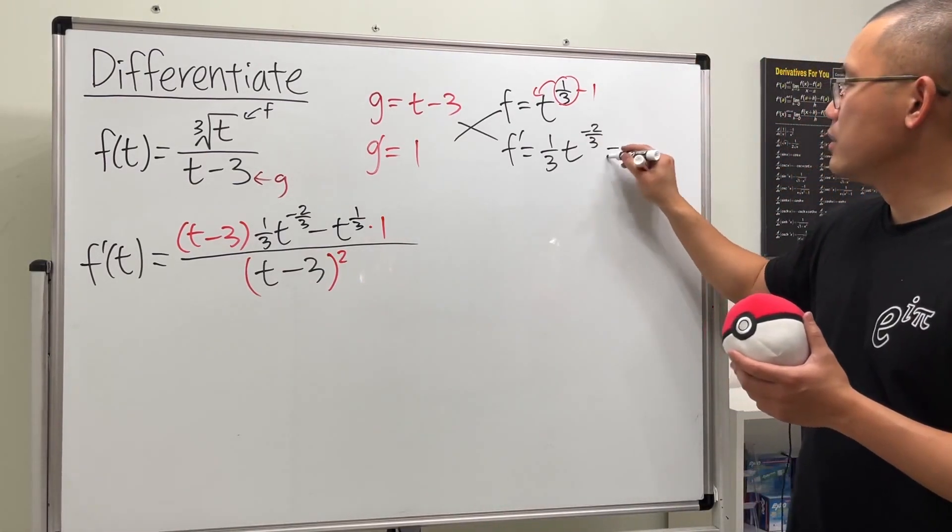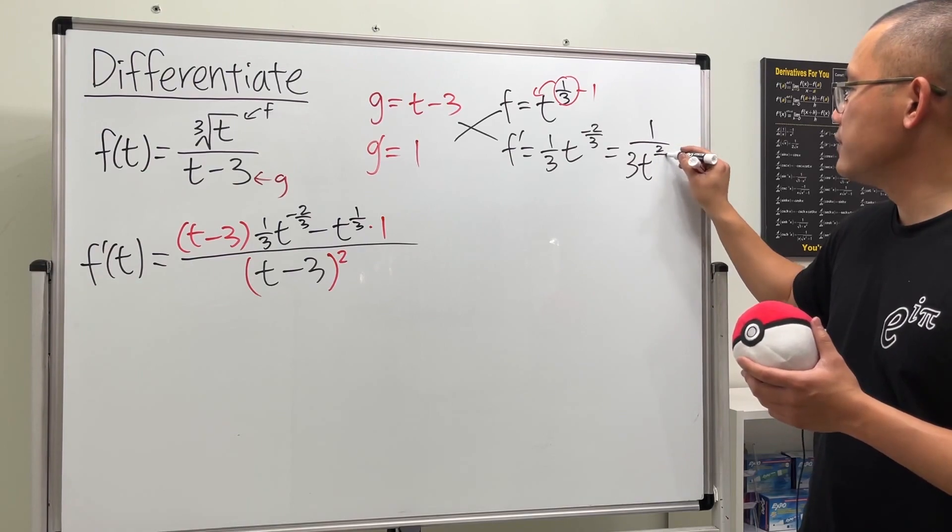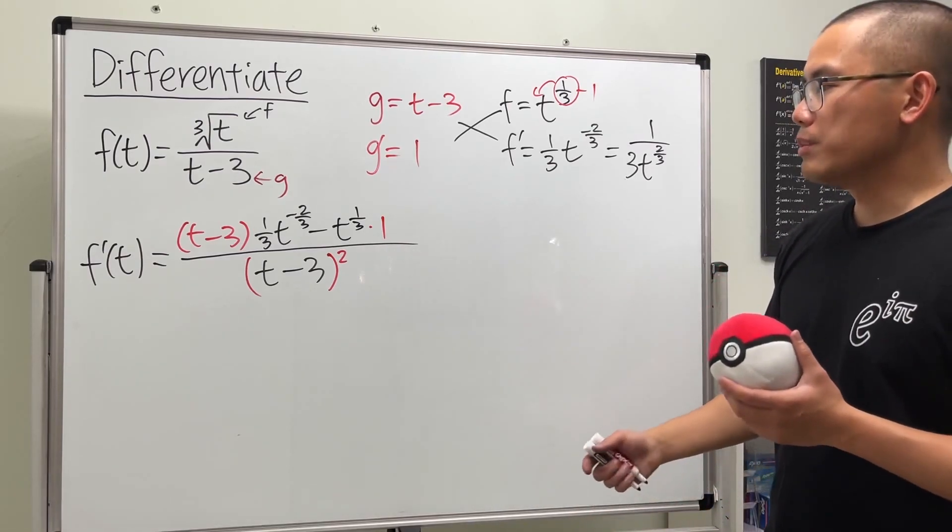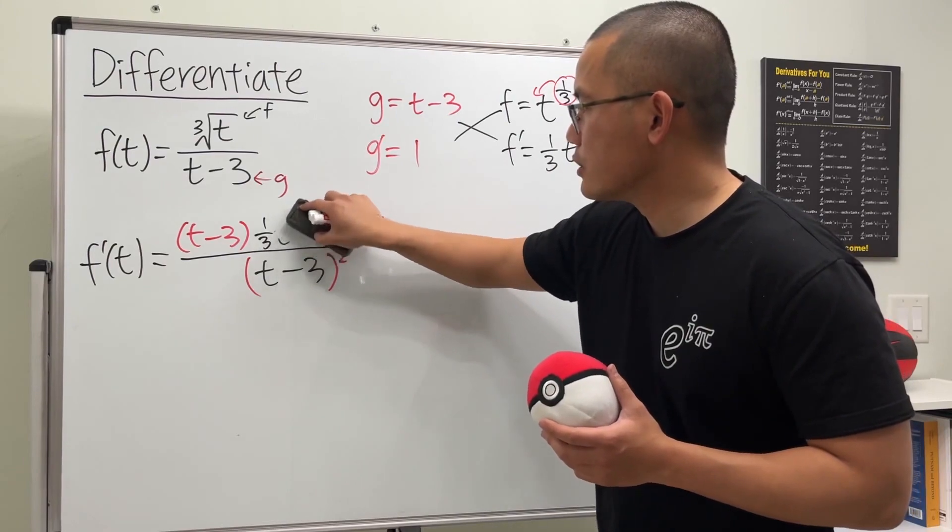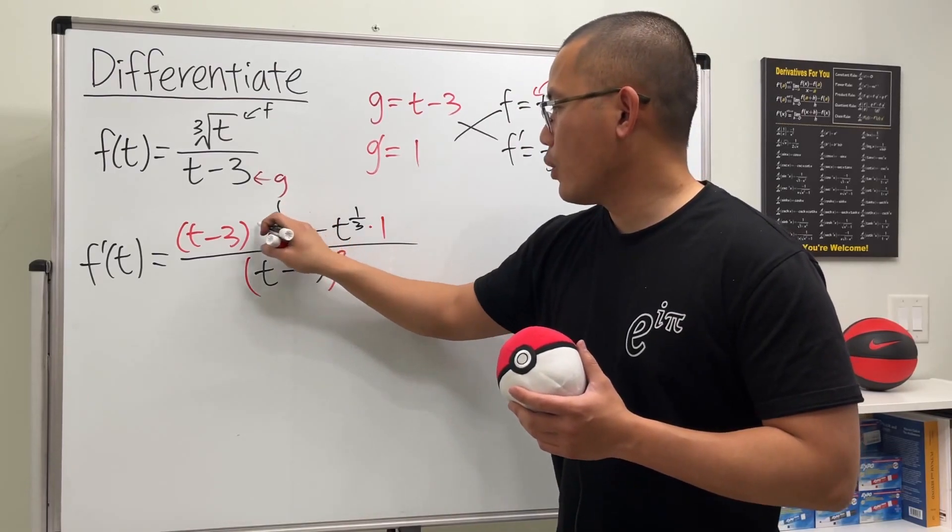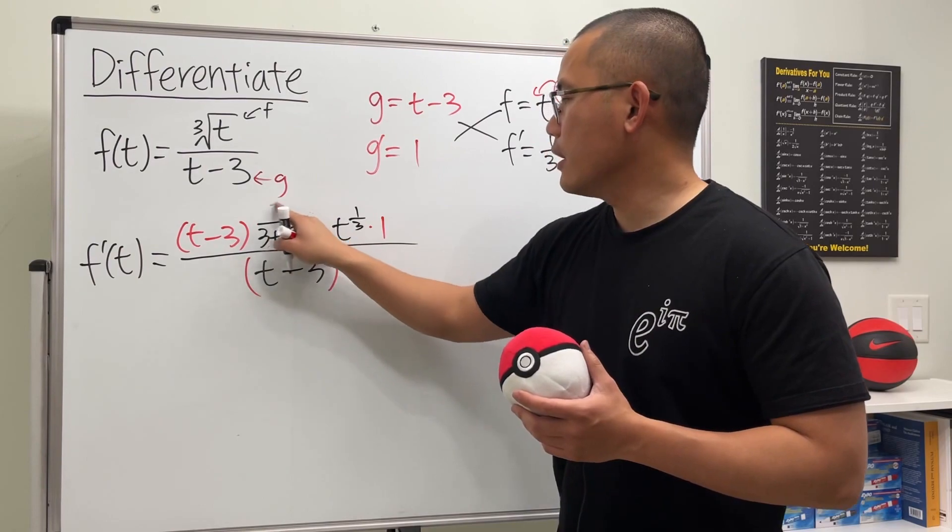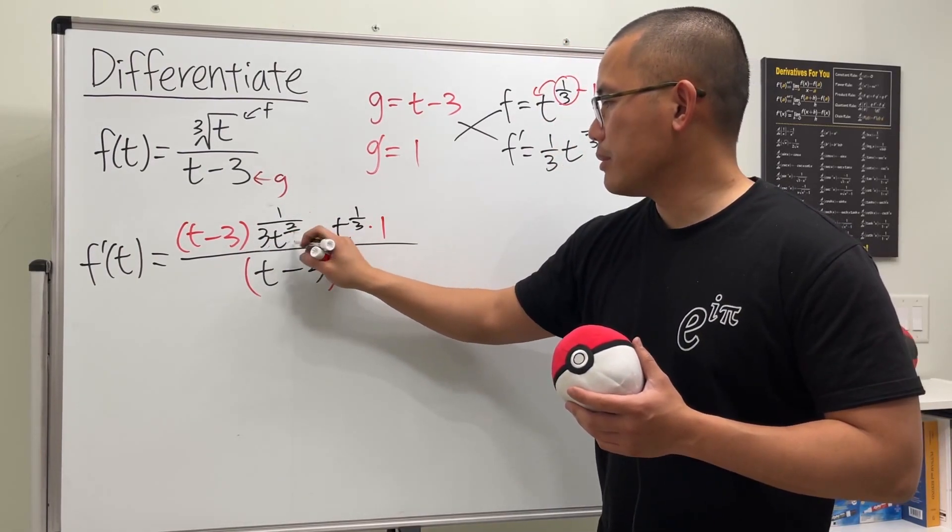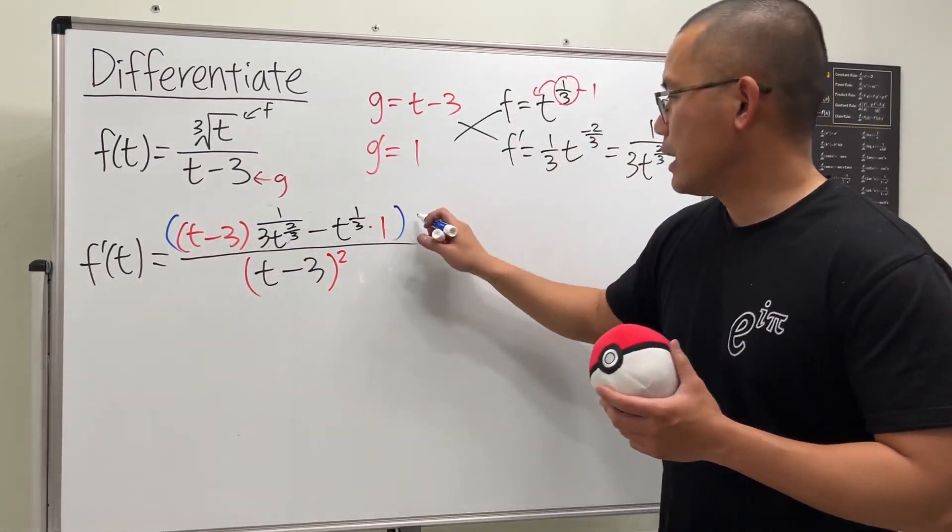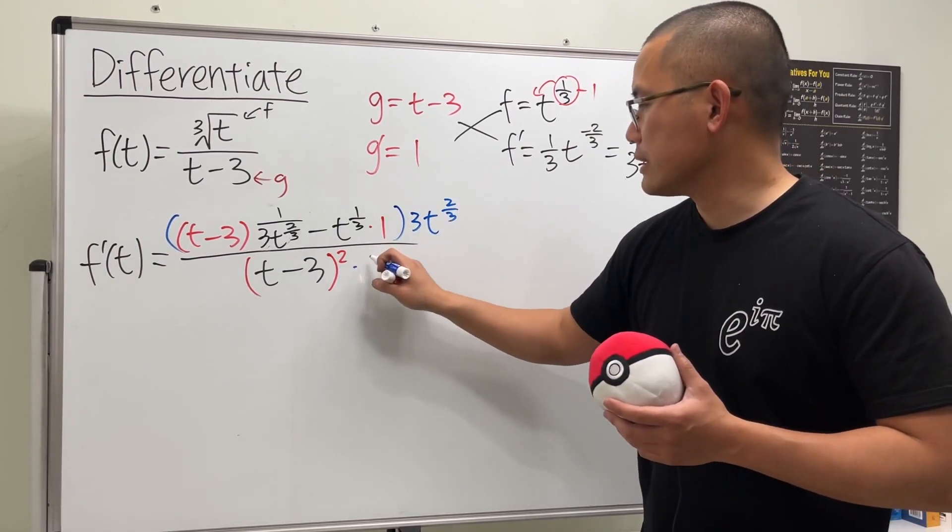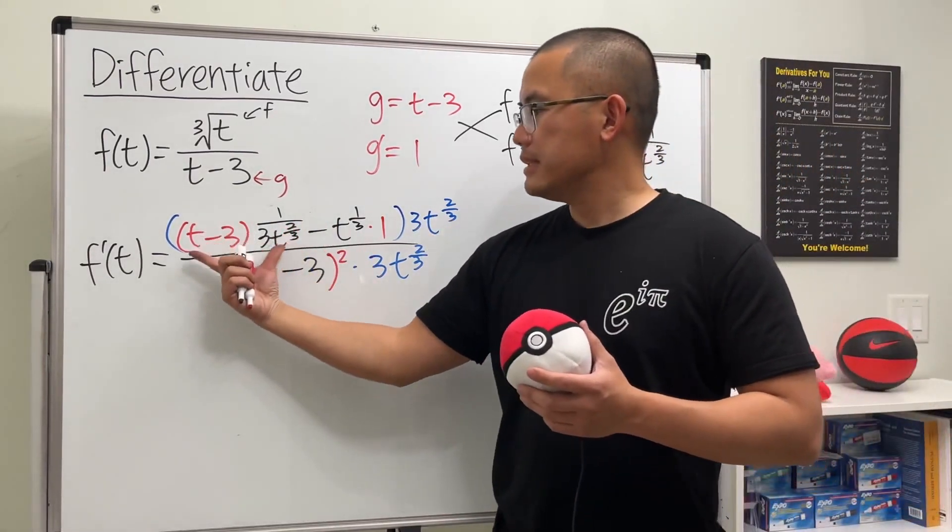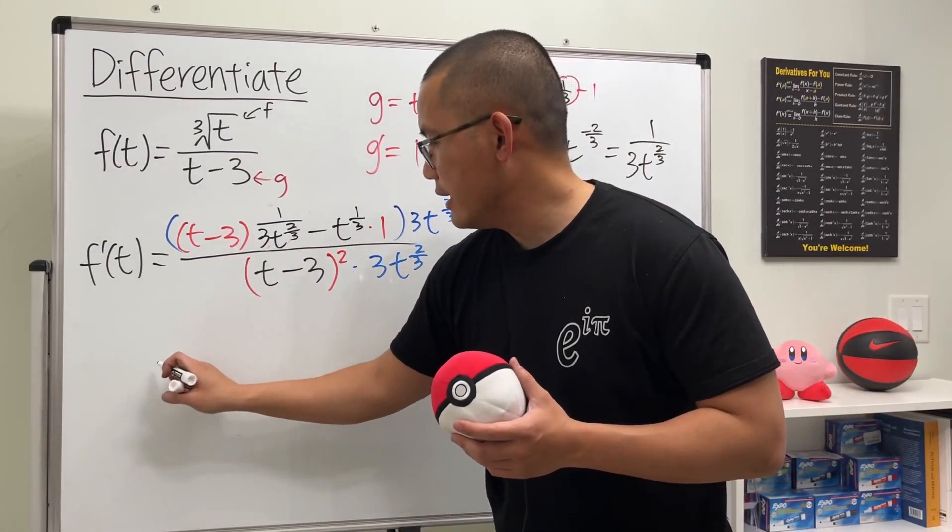So the way to clean this up is we multiply the top and bottom by this. Let me actually rewrite this so that it will be a little more clear. We have the one over three t to the two-thirds power, so we are going to multiply the top and bottom by this denominator. Multiply by three t to the two-thirds power, and also do the same thing on the bottom. When we take this times this part, they cancel, so we just have t minus 3 left, and that's pretty nice.